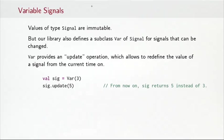A var is a subclass of signal that we are going to see next. So far, all values of type signal are immutable. A signal is an immutable function from time to the signal values. But in fact, our library also defines a subclass var of signals for signals that can be changed. The change is done by means of an update operation which var provides. And that update operation allows to redefine the value of a var signal from the current time on.